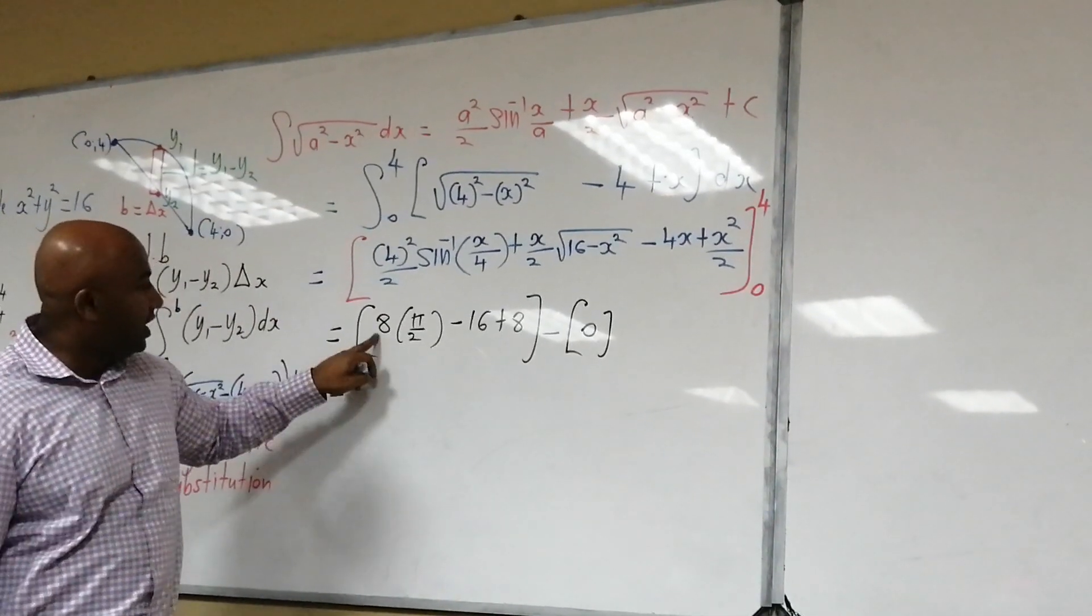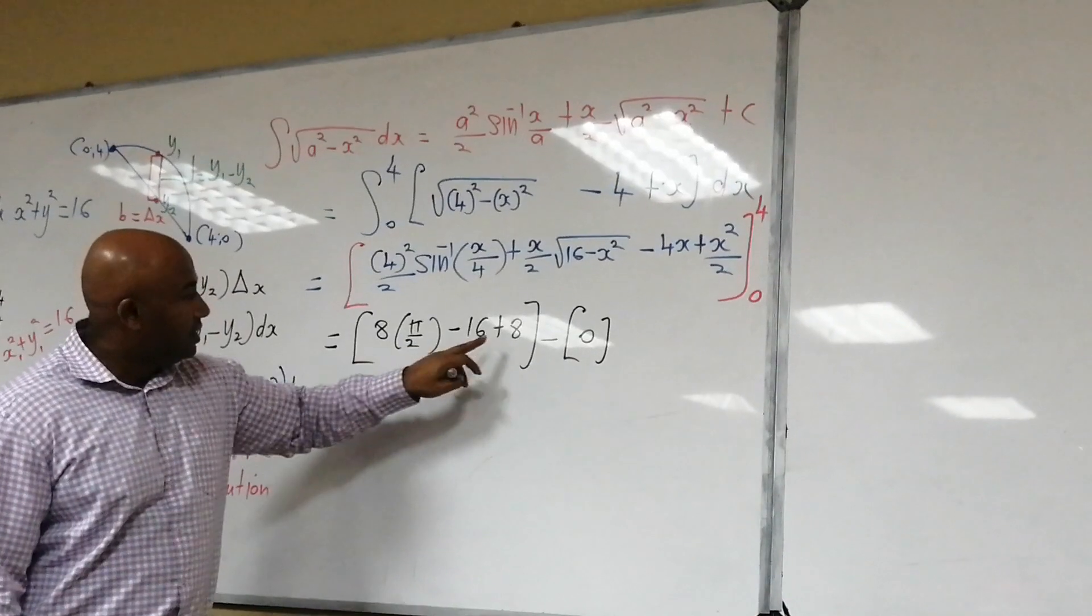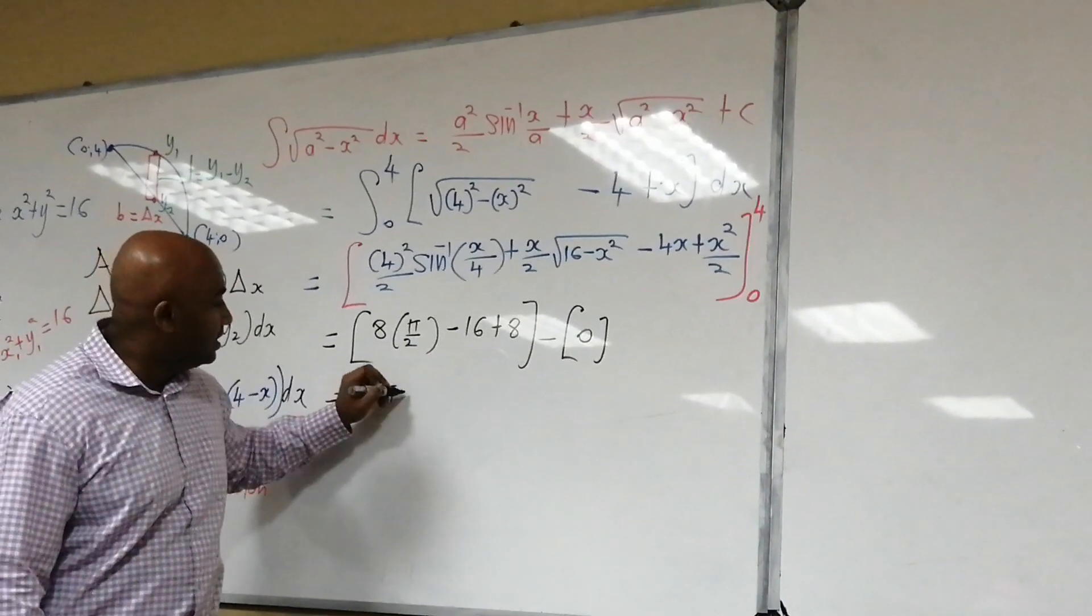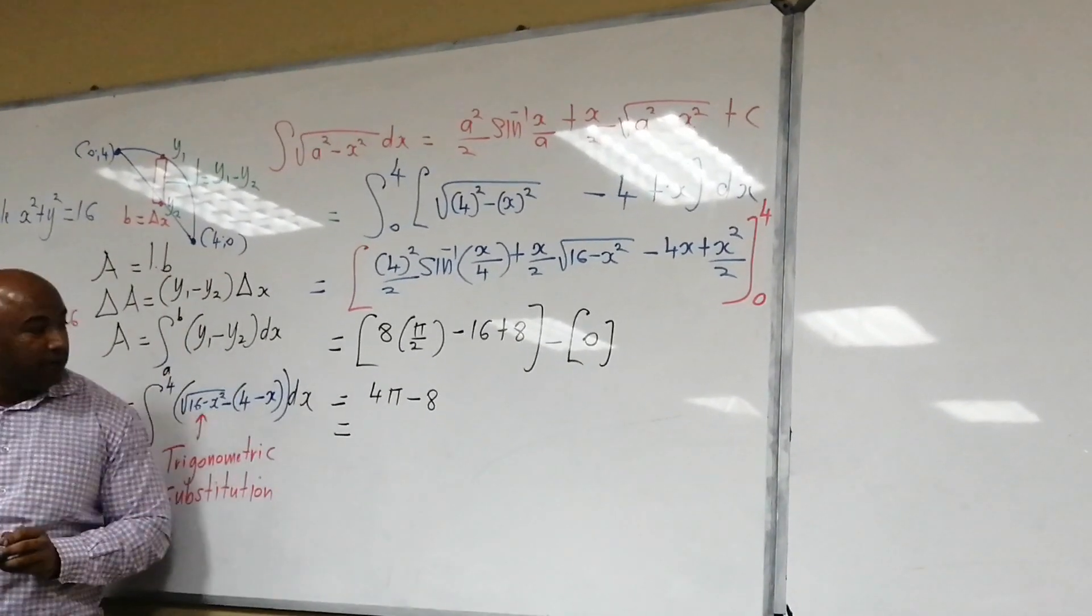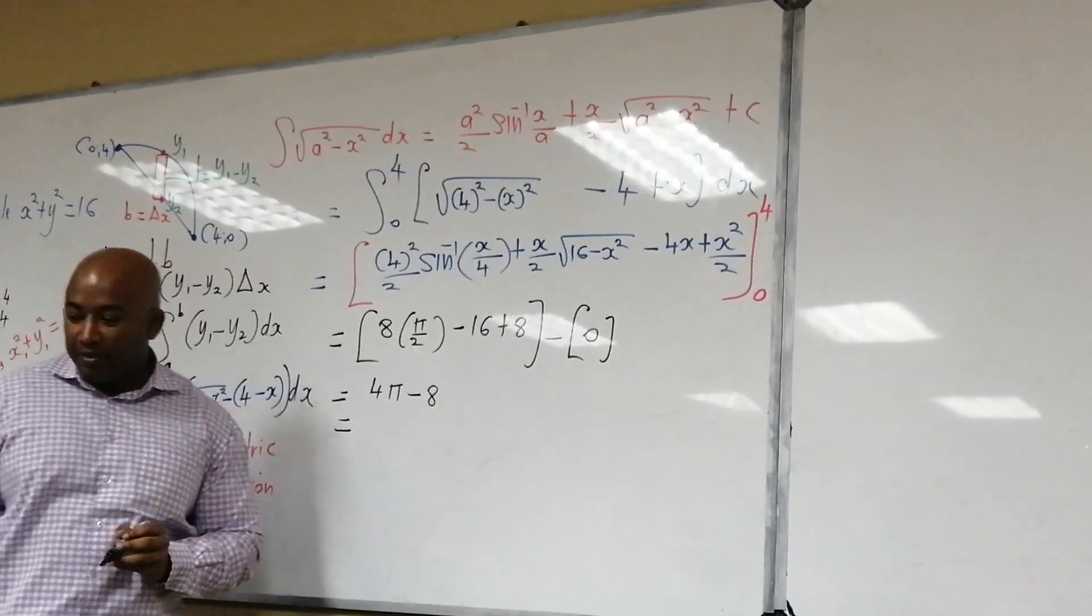So therefore, 8 divided by 2, I'm getting 4π, and minus 16 plus 8 is minus 8, so 4π minus 8.